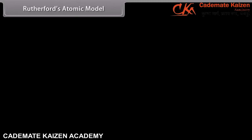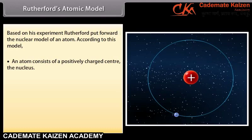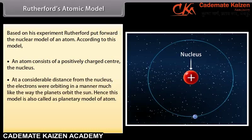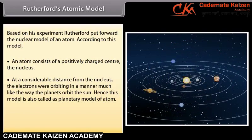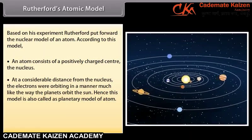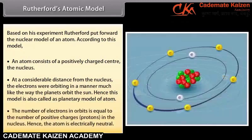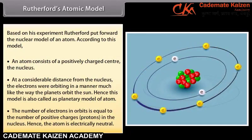Rutherford's Atomic Model. Based on his experiment, Rutherford put forward the nuclear model of an atom. According to this model, an atom consists of a positively charged center called the nucleus. At a considerable distance from the nucleus, the electrons were orbiting in a manner much like the way the planets orbit the sun. Hence, this model is also called the planetary model of the atom. The number of electrons in orbits is equal to the number of protons in the nucleus, so the atom is electrically neutral.